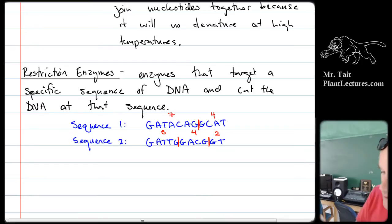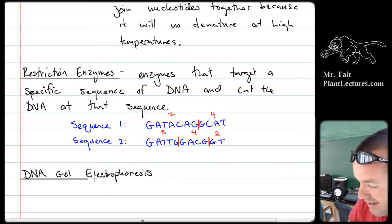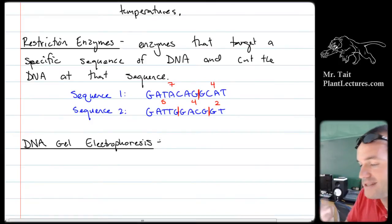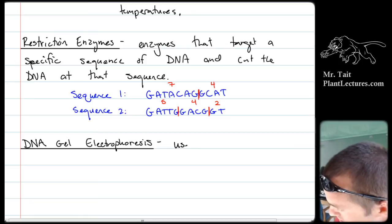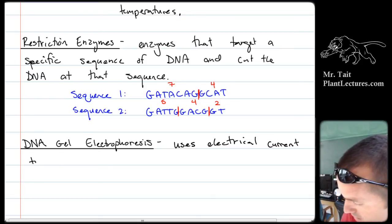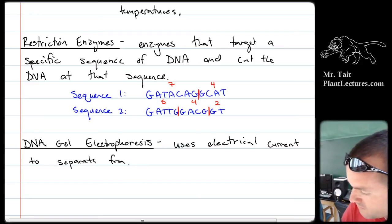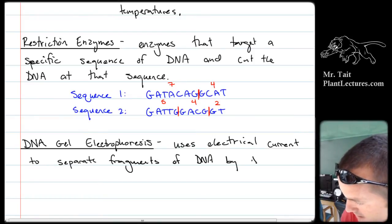The way we analyze those segments is using a process called DNA gel electrophoresis. This process uses electrical currents in order to separate DNA fragments by the size of the fragment.